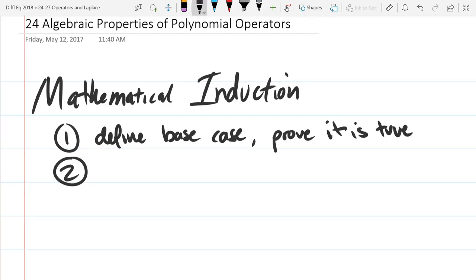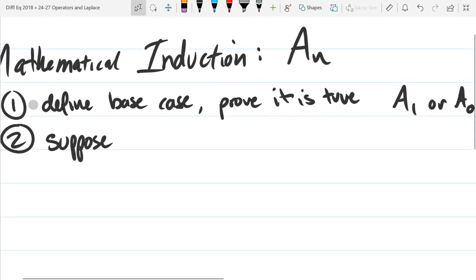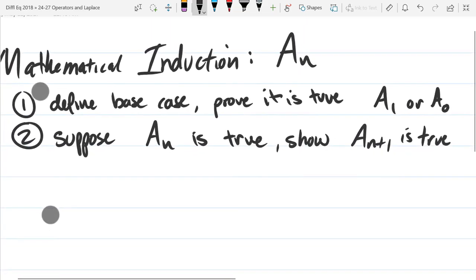This is done with a two step process. First, define base case and prove that it's true. Second, assume it's true for n and show it's true for n plus 1. We'll take some statement a_n. This is usually going to be a 1 or a 0. Sometimes you need to do both. Show a_n plus 1 is true.